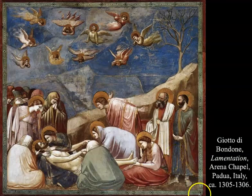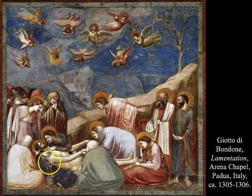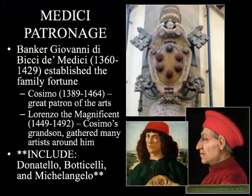The final interesting feature of this work by Giotto is that there are figures at the bottom whose backs are completely to you. Giotto does this to give you a sense that you're being invited into the scene and are a part of it — so when you're looking at it in the Arena Chapel, you feel connected to this image of Christ. This work is really considered one of the starts of the Italian Renaissance.